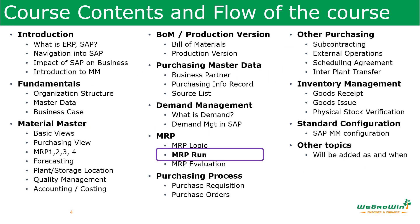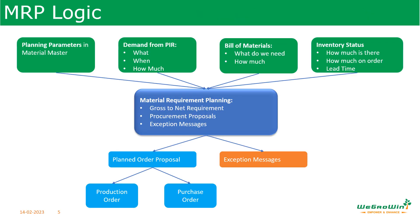In the last session we discussed the logic of how MRP works. In this session we will discuss how to run MRP in SAP. The MRP logic takes inputs from planning parameters, demand, bill of materials, and inventory status. Based on these, the system arrives at gross requirement which is converted into net requirement, and the system will give planned orders, purchase requisitions, and exception messages.